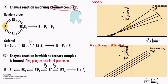In the case of a random ordered ternary complex, the enzyme can bind to the first substrate S1 or the second substrate S2 first — there is no order. Whereas in the case of an ordered ternary complex, there is a specific order: S1 must bind first to form an enzyme-substrate complex, and then S2 binds to form the ternary complex.